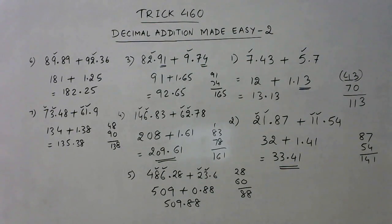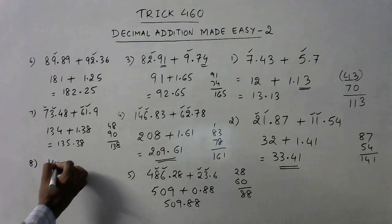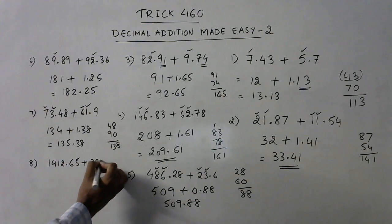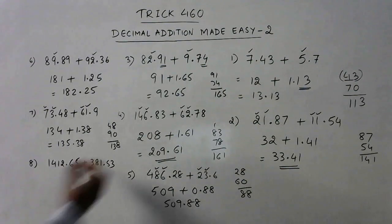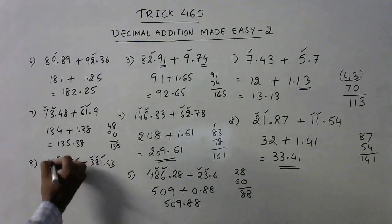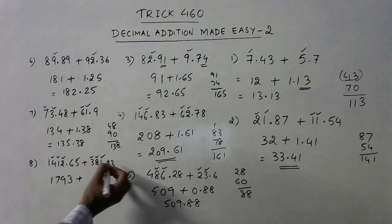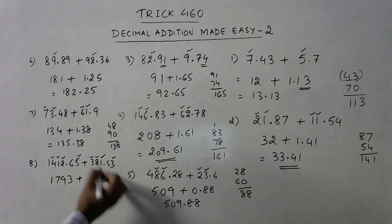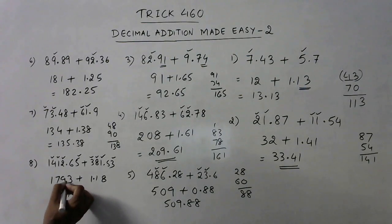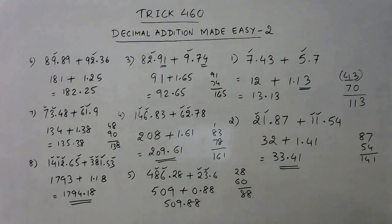So I hope you have understood this method, and we will take one concluding example now. See, 1412.65 added to 381.53. So 1 and 2 is 3, 8 and 1 is 9, 3 and 4 is 7, and 1 is left, so 1 plus... now since the digits are equal, we can add directly: 3 plus 5 is 8, 6 plus 5 is 11. Now three digits, so we need to put a decimal here, and your answer will be 1793 becomes 1794, and 0.18.